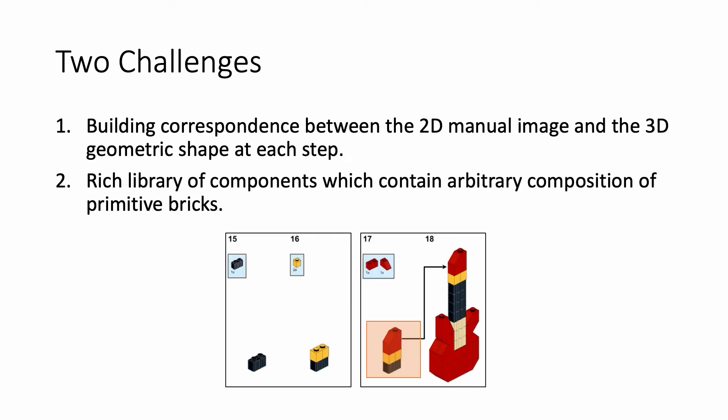The second challenge is the rich library of components which contain arbitrary composition of primitive bricks. Although most shapes can be built from a finite set of LEGO primitives, they can also be flexibly composed into more complex sub-modules. So a manual parser must be capable of inferring 3D poses of unseen objects composed from seen primitives.